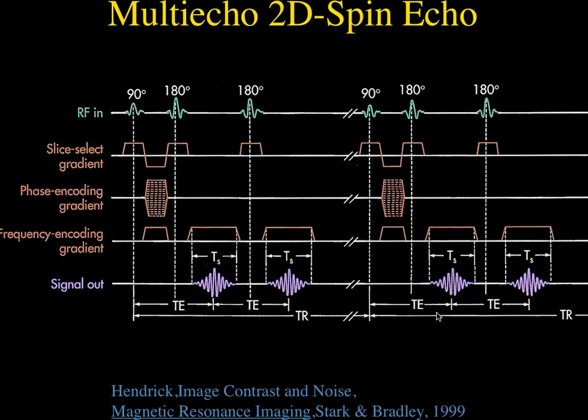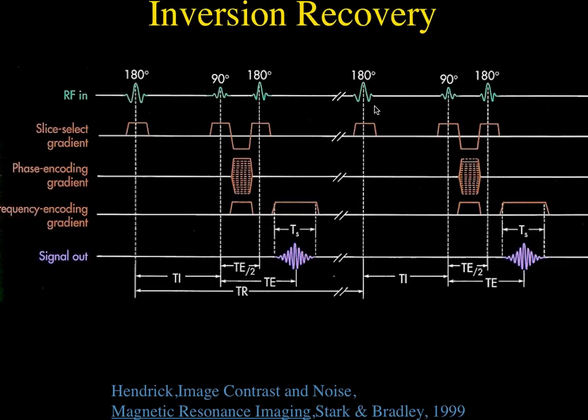If you do it this way, you still end up with really only one image, and you've got a lot of dead time waiting after getting the last echo before doing the next 90-degree pulse.